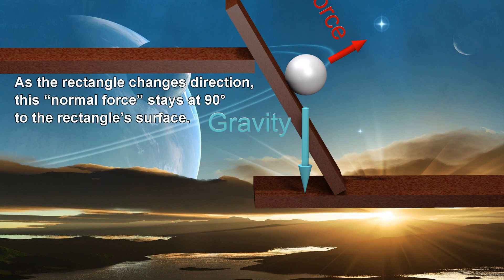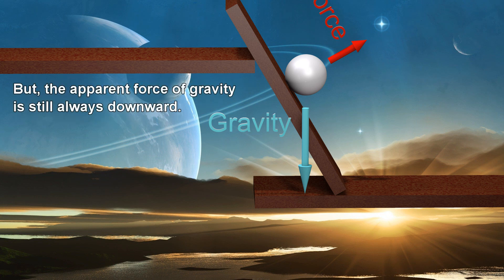As the rectangle changes direction, this normal force stays at 90 degrees to the rectangle's surface. But the apparent force of gravity is still always downward.